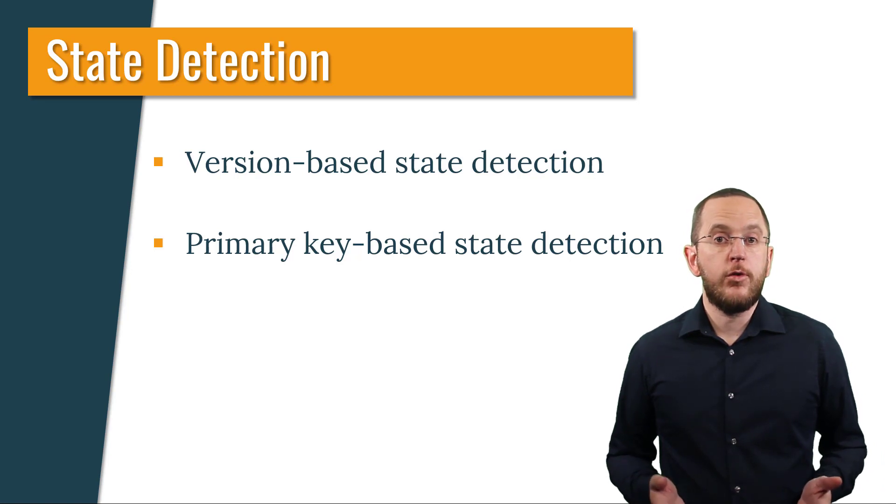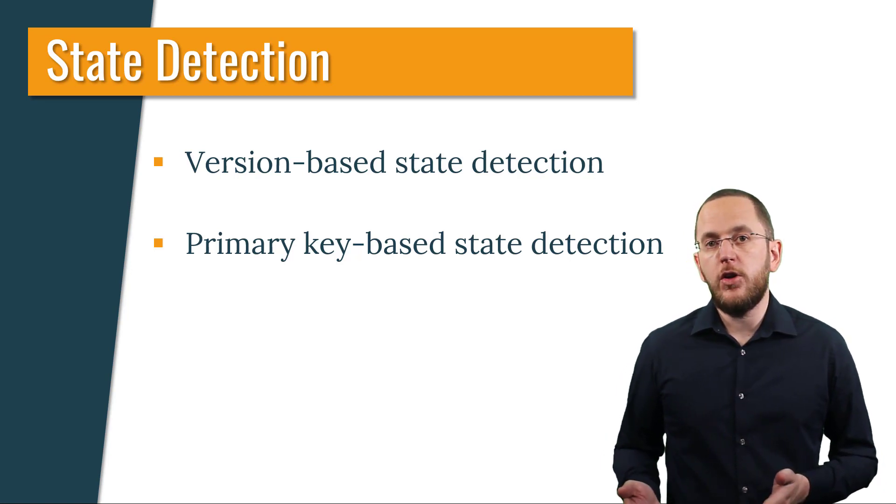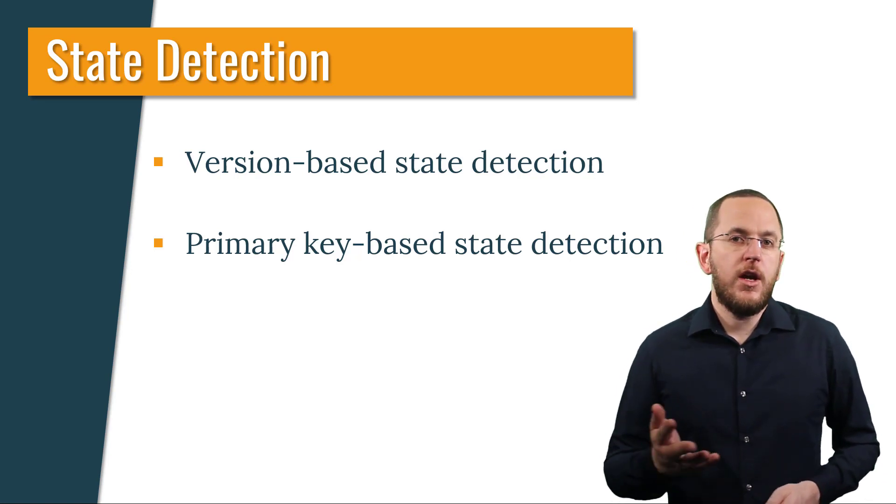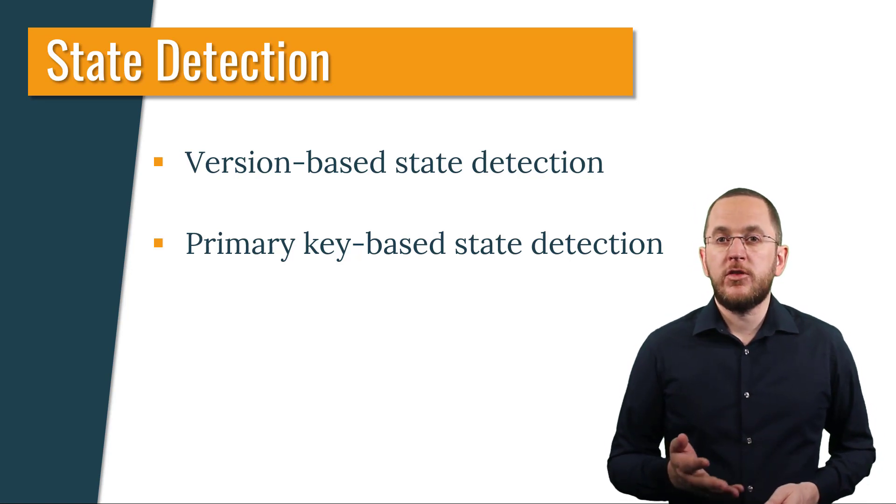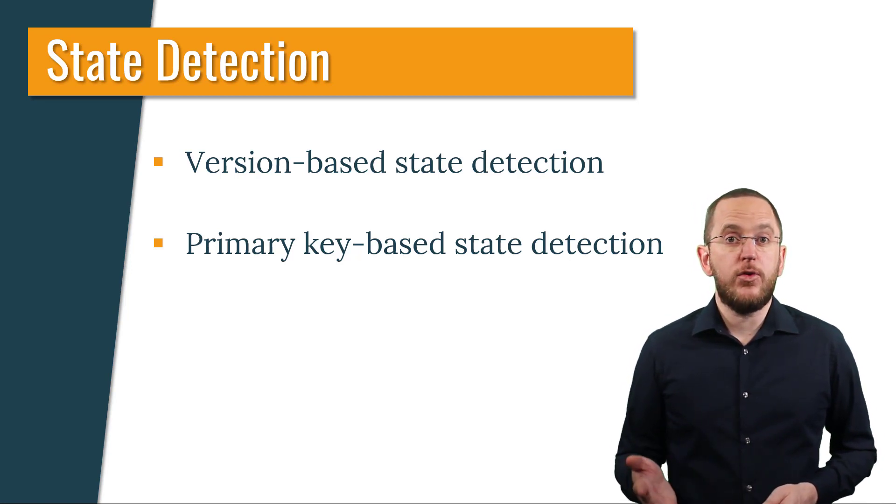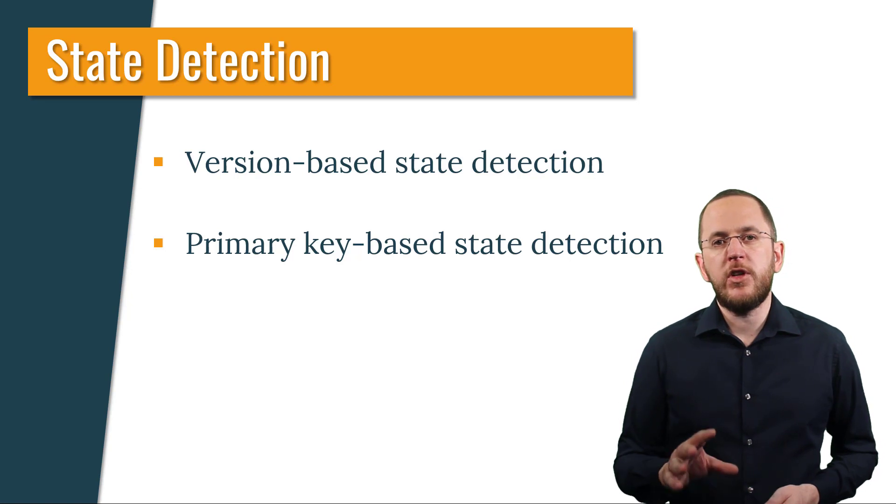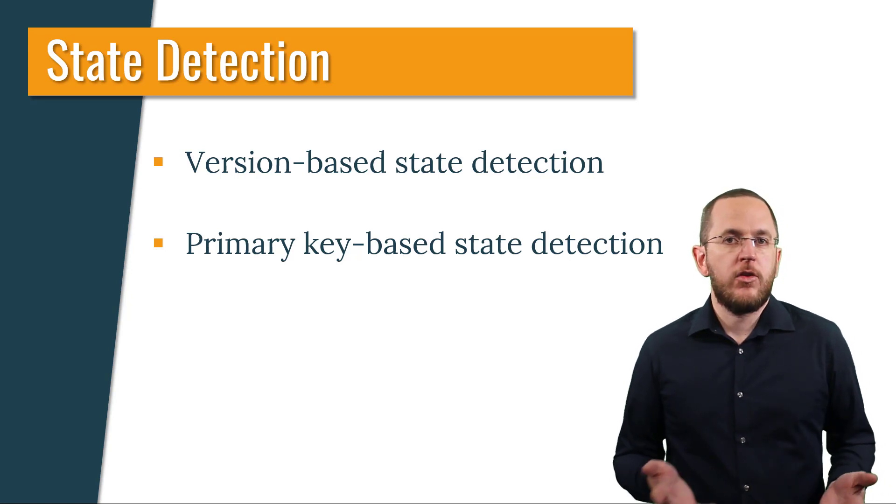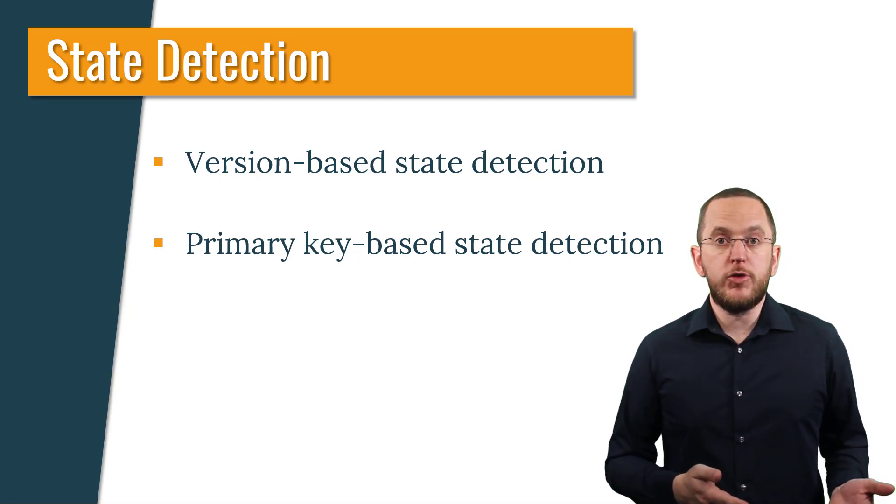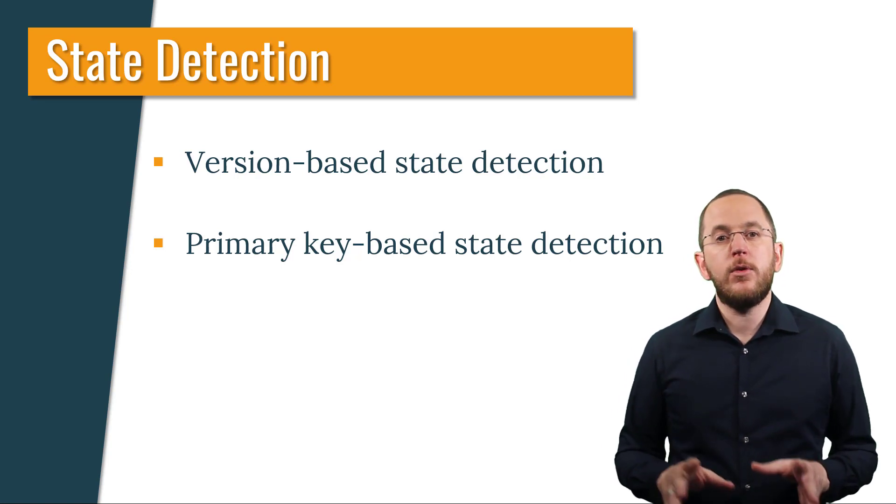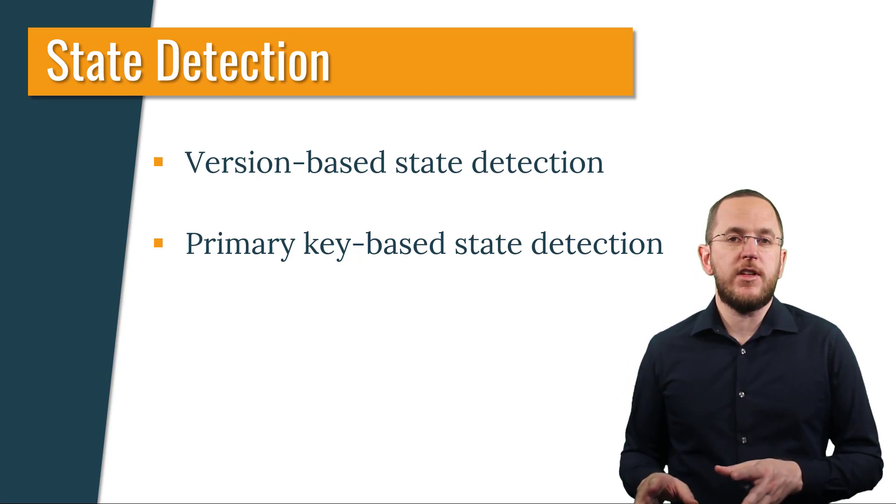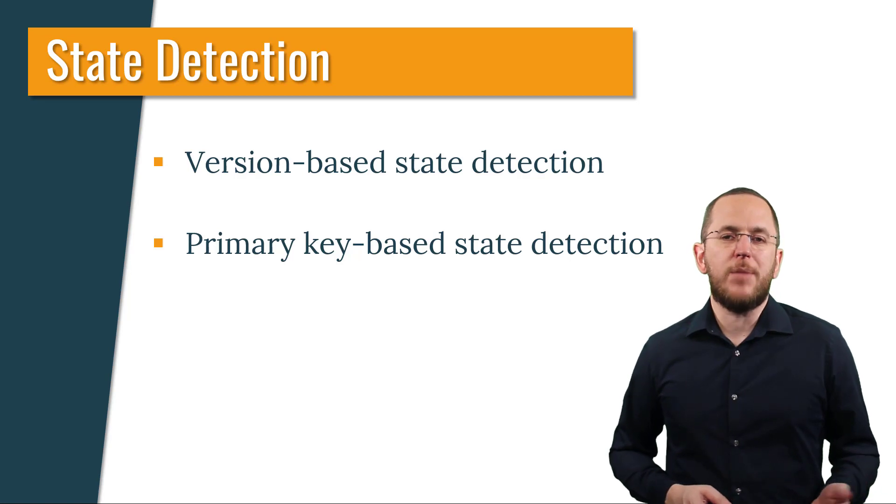Spring Data JPA also uses the version property to detect new entity objects it needs to persist. The persistence provider manages the property's value and sets it for the first time when persisting the entity. Due to that, the version property of a new entity object is null. And if it contains any value, the entity object maps an existing database record, which Spring needs to update.